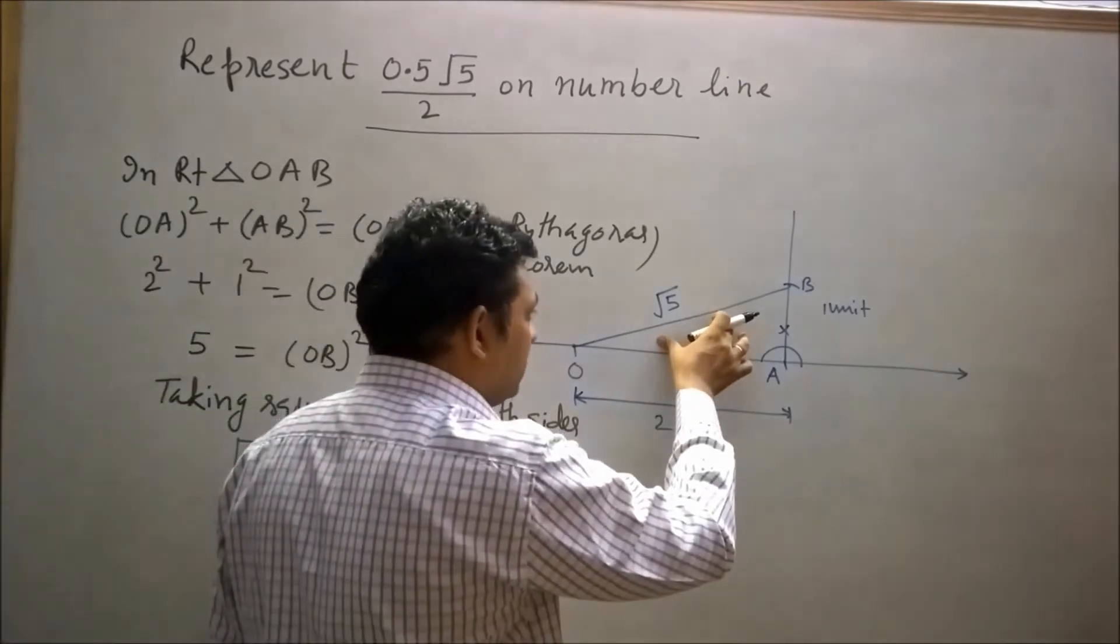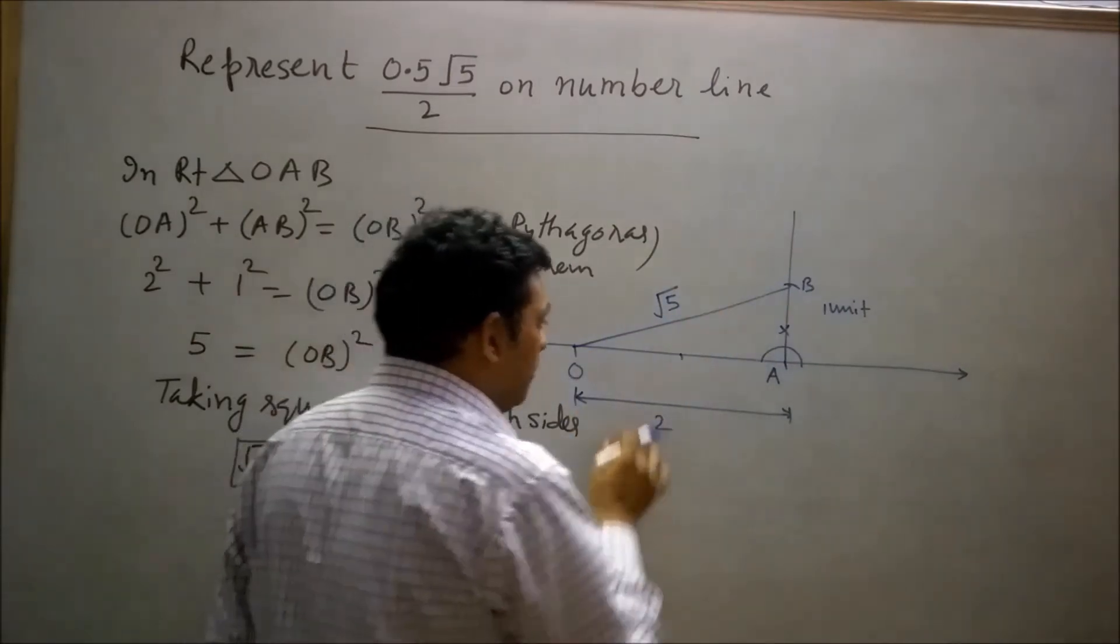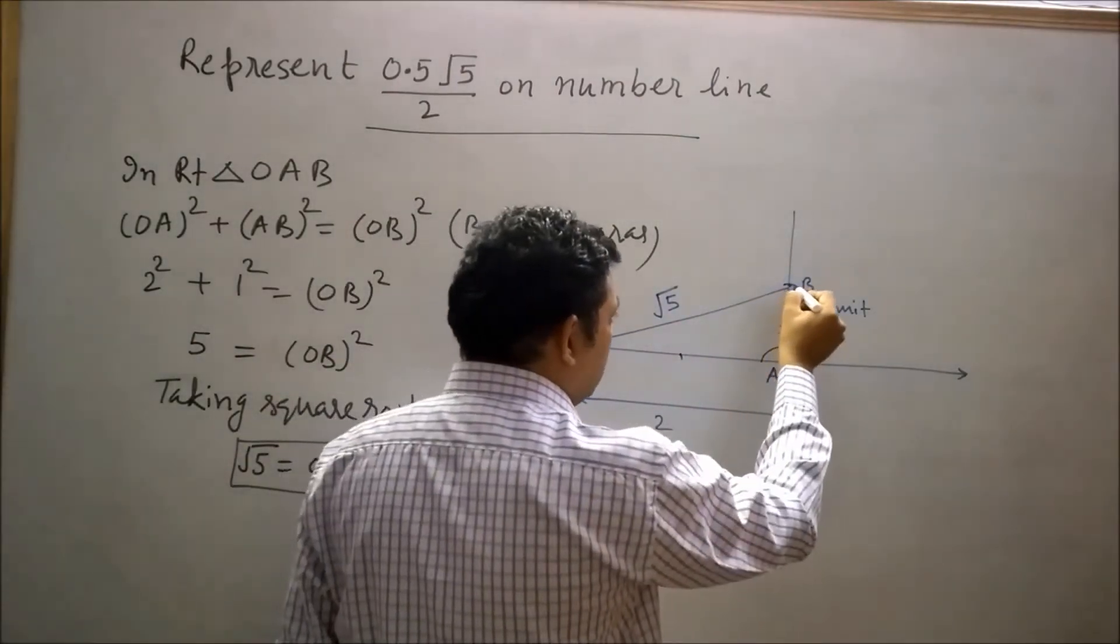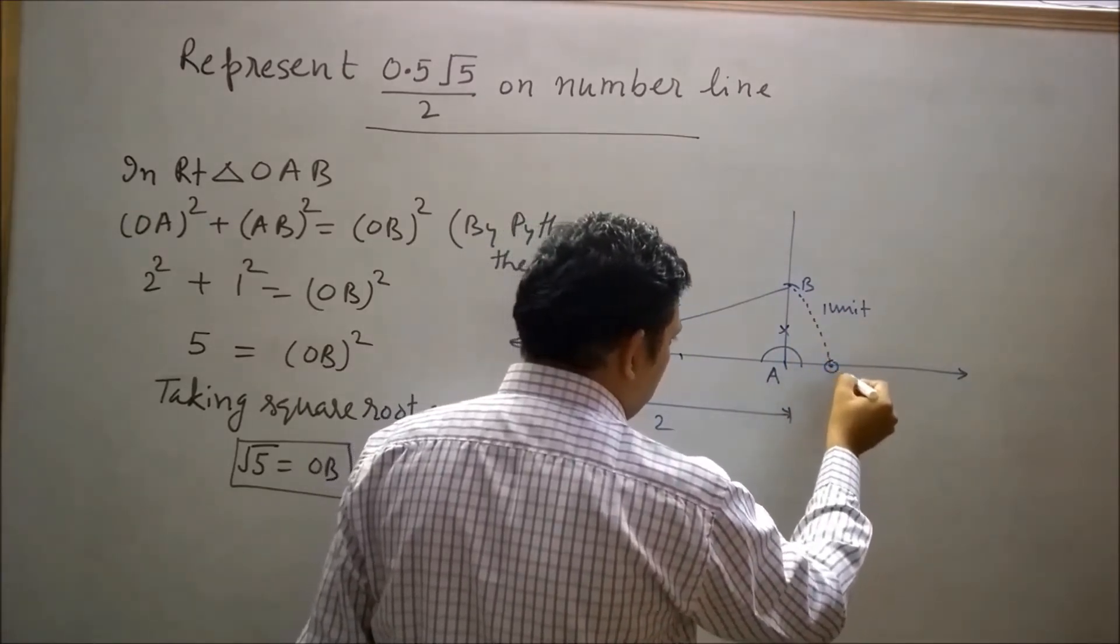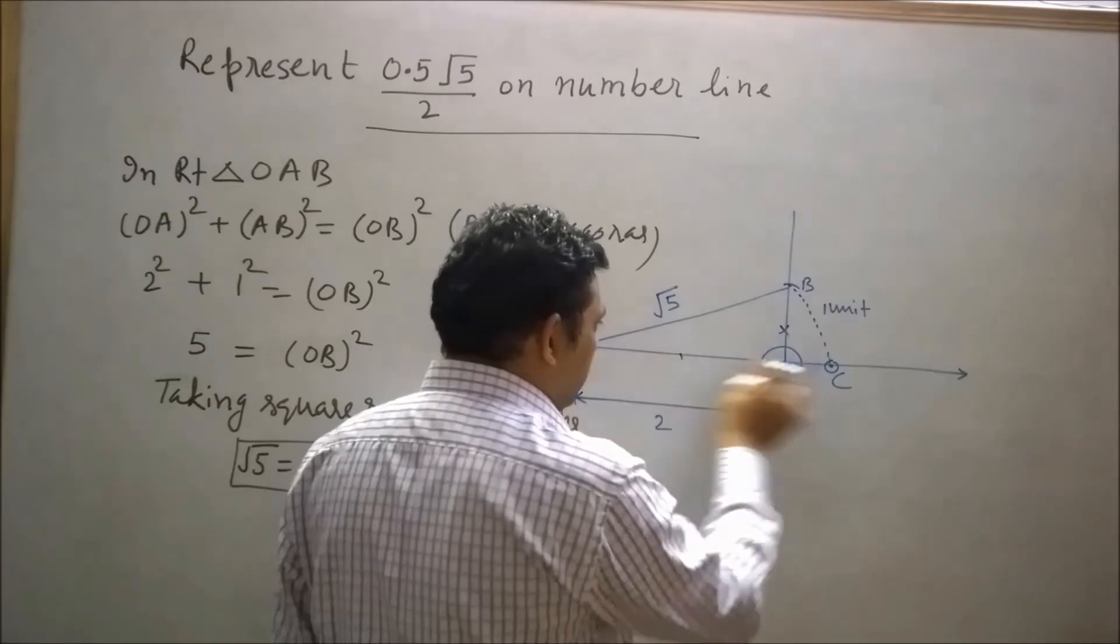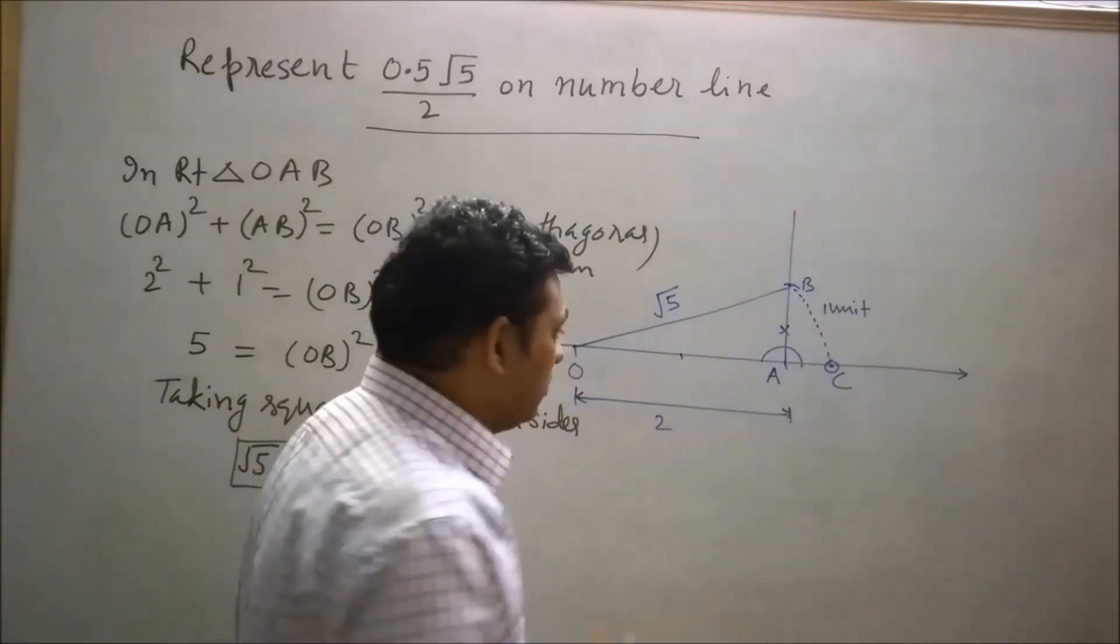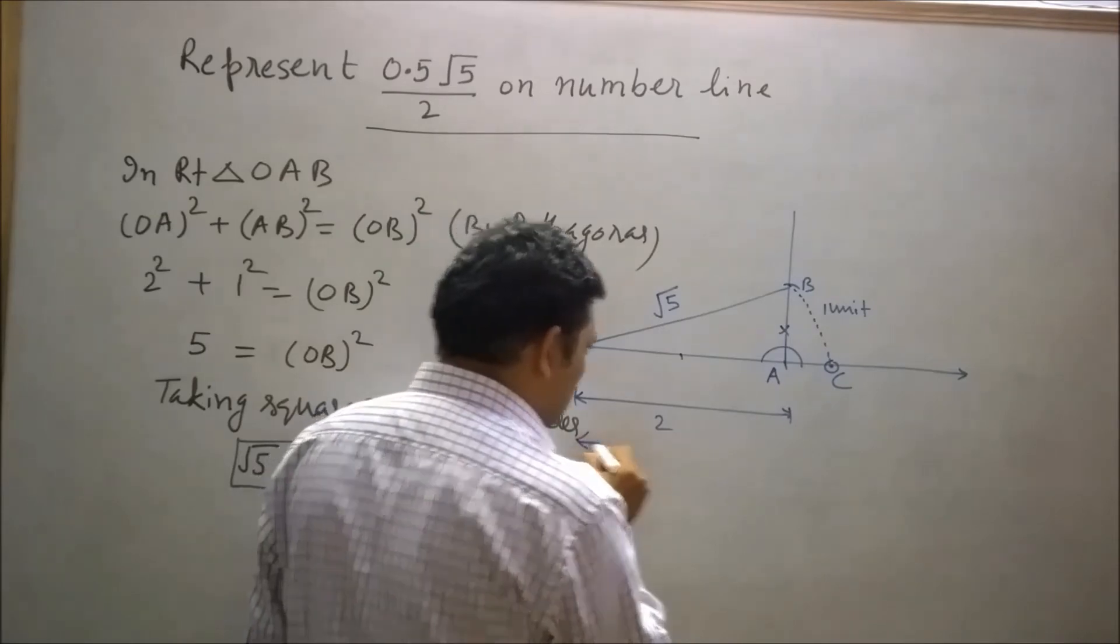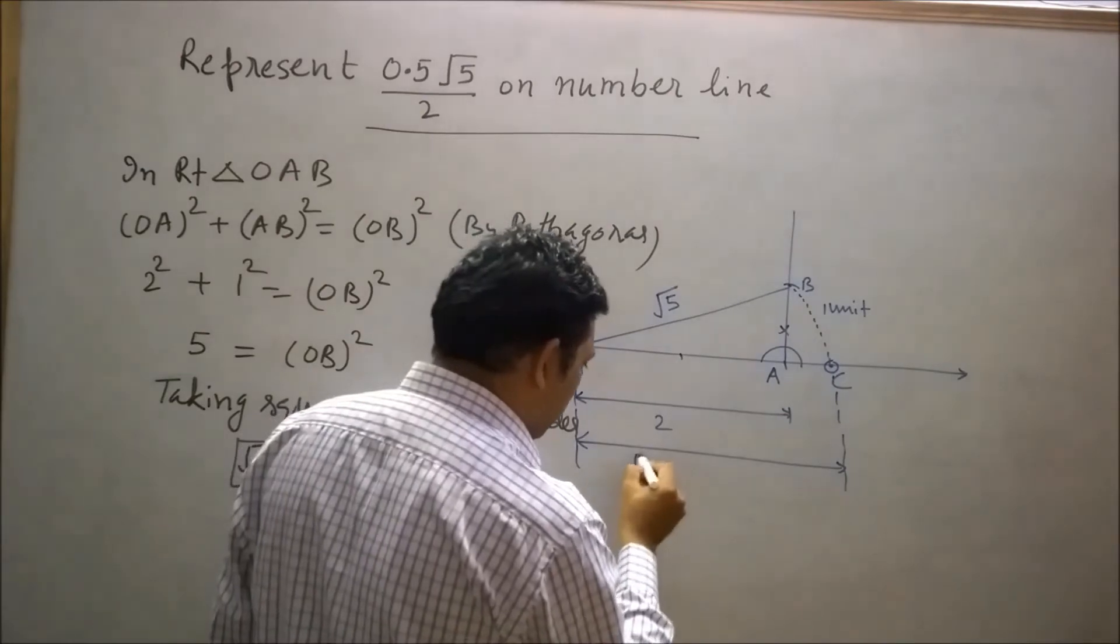So we can say OB is equal to √5. Now draw an arc with radius equal to OB from the center O. Let's say this arc will intersect the number line at point C. Now OC will be equal to OB since the radii of the same circle are equal. So OC will be √5 units.